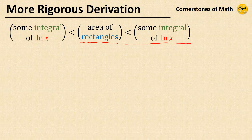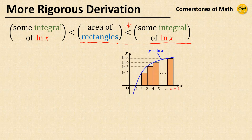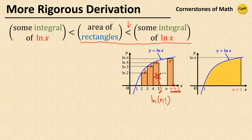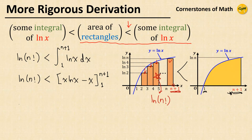Next, let's obtain the upper bound. Because now the area of the rectangles must be less than something, we construct rectangles differently — below the graph of y = ln(x) — and redraw the final rectangle ending at x = n + 1. The sum of the areas of these rectangles is also ln(n!), and comparing with the area under y = ln(x) from x = 1 to n + 1, the former is less than the latter. So ln(n!) < integral of ln(x) from 1 to n + 1. Calculating gives ln(n!) < (n+1)·ln(n+1) - n.